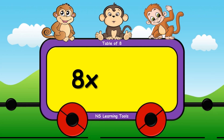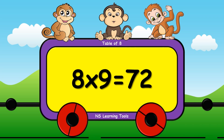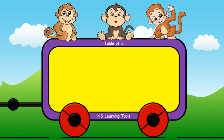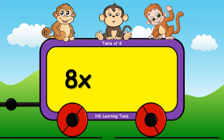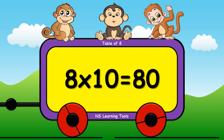Eight nines are seventy-two. Eight tens are eighty.